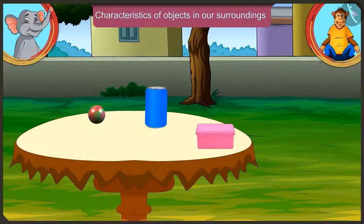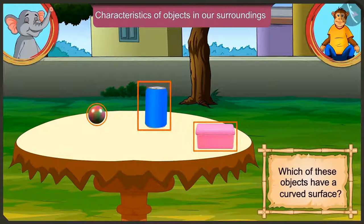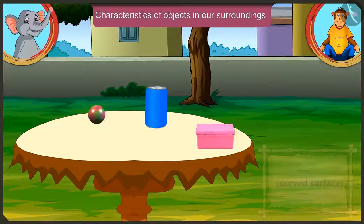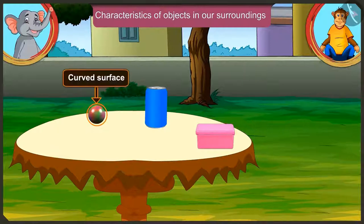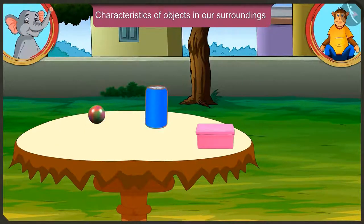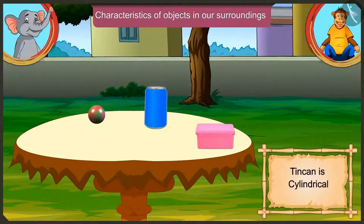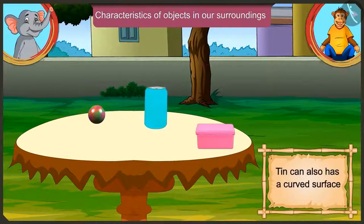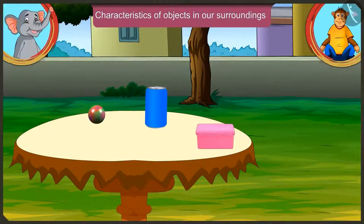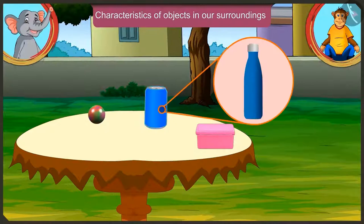Now can you tell me, amongst the objects that are kept here, which of them have a curved surface? This marble has a curved surface. And the tin can? This can stand upright like the lunch box, but it is also curved like the marble. It has a cylindrical shape — it is a cylinder. The surface of cylindrical objects is curved. So this tin can also has a curved surface just like the water bottle.